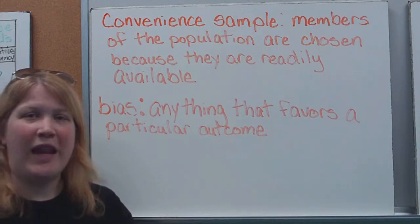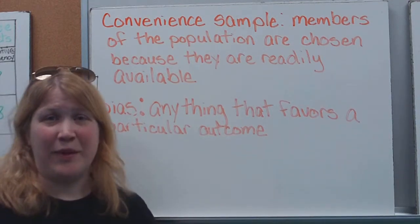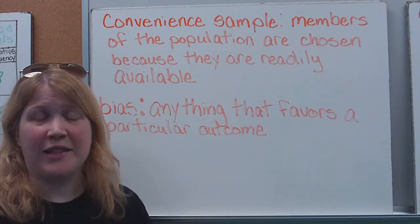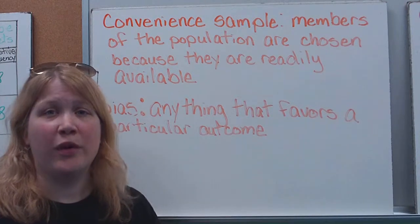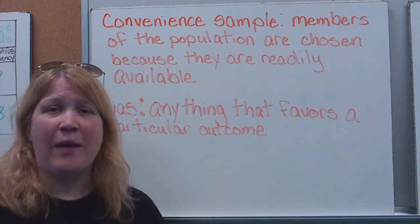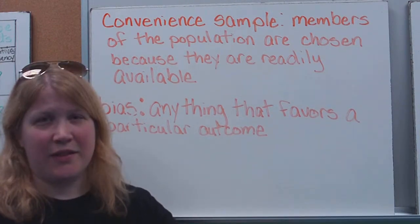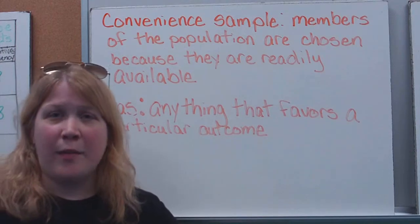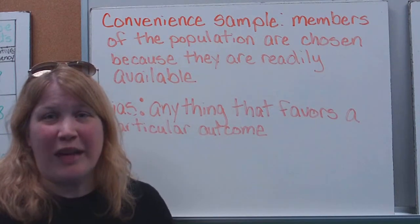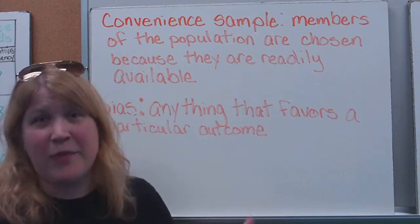Another type of sampling we can have is what we call convenience sampling, and it's exactly what it sounds like. I'm asking the people that are convenient to ask, the people who are right there and who are easy to get. So, for example, if I was going to take a convenience sampling, I might give all of you in my class, since you're stuck here and can't leave, the survey that I wanted answered. That was convenient for me. I didn't have to go anywhere. You were all right here. You have to do it so you don't fail. Convenient.